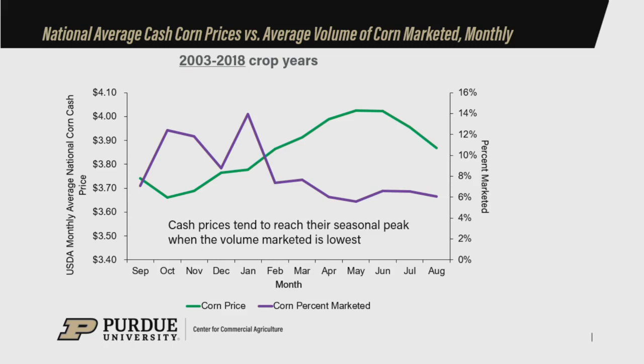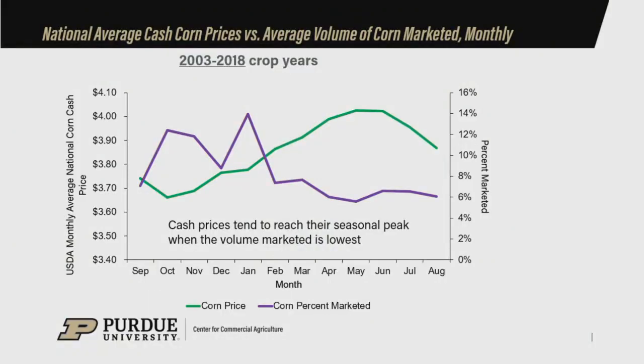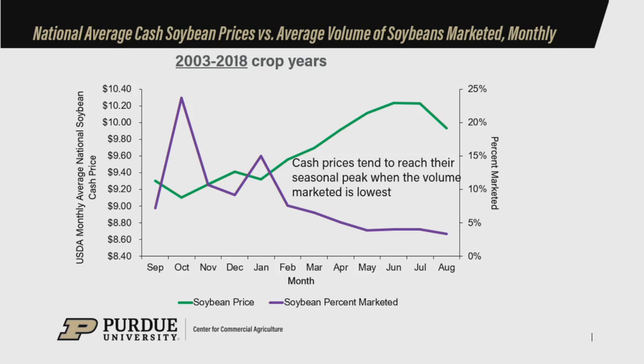Because corn and soybeans are storable commodities, we have this market throughout the year. The market does pay a storage premium if we're willing to store that crop, so the price steadily increases throughout the year. However, the percent of the crop marketed later in the year tends to be quite a bit less than what got marketed at and around harvest. It's an interesting inverse relationship as we think about storage returns and opportunities for farmers to earn those returns. A very similar — not identical — but similar pattern exists for soybeans as well. Cash prices tend to rise on average as you move through the storage season, yet we market the smallest volume of soybeans during the time when cash prices are at their peak.